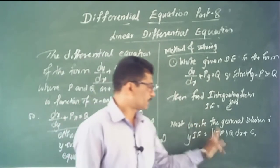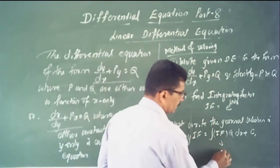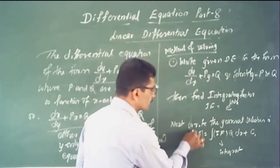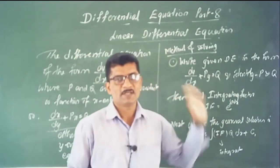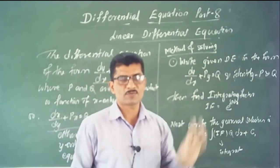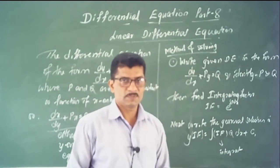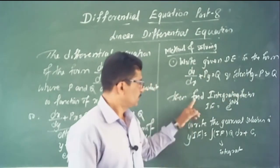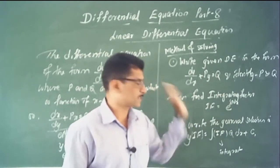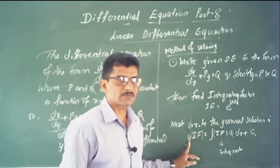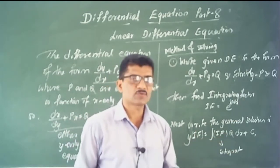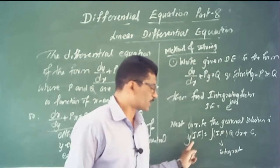Integrate these values and you get the general solution of the given differential equations. The steps are: first write dy/dx + P·y = Q, identify P and Q, find the integrating factor e^(∫P dx), then the general solution is y × I.F. = ∫(I.F. × Q) dx + C. Integrate to get the general solution.